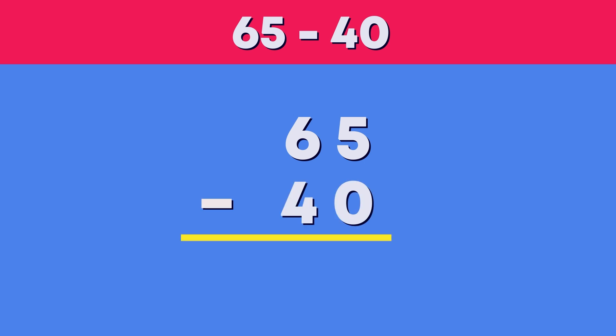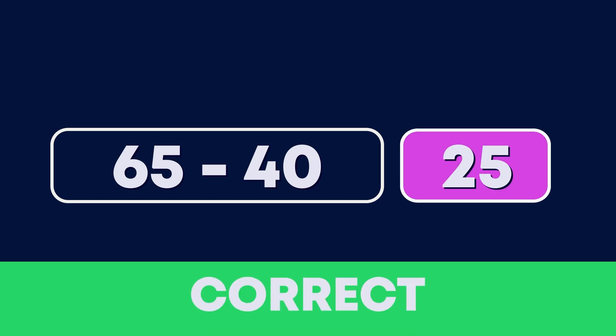When subtracting a two-digit number and tens, the digit in the tens place will get smaller. The digits in the ones place will stay the same. Count back four tens from 65 with me: 55, 45, 35, 25. 65 minus 40 is 25. That's correct!